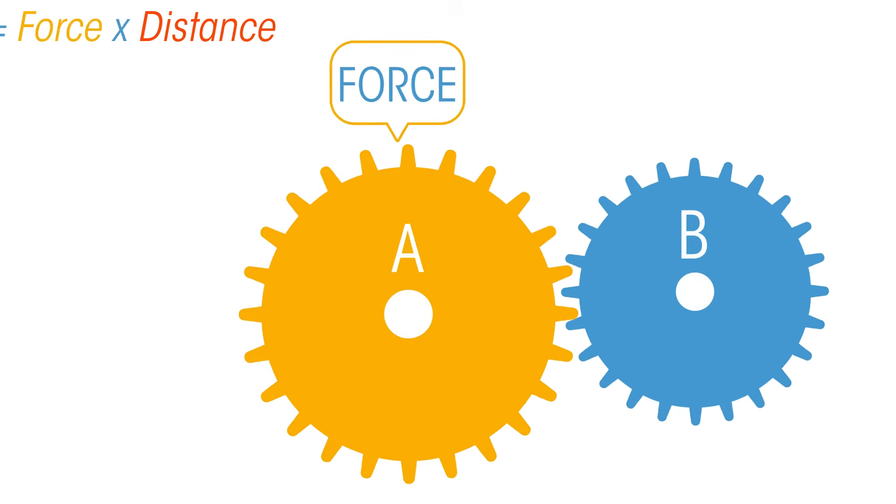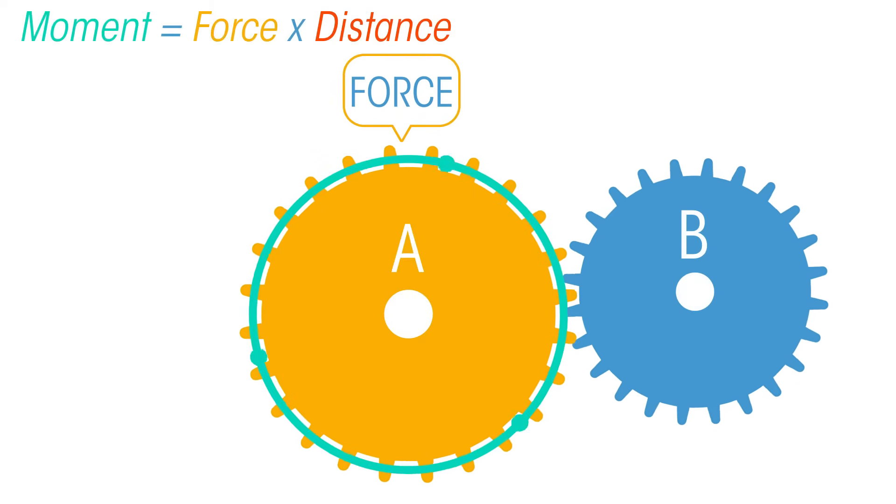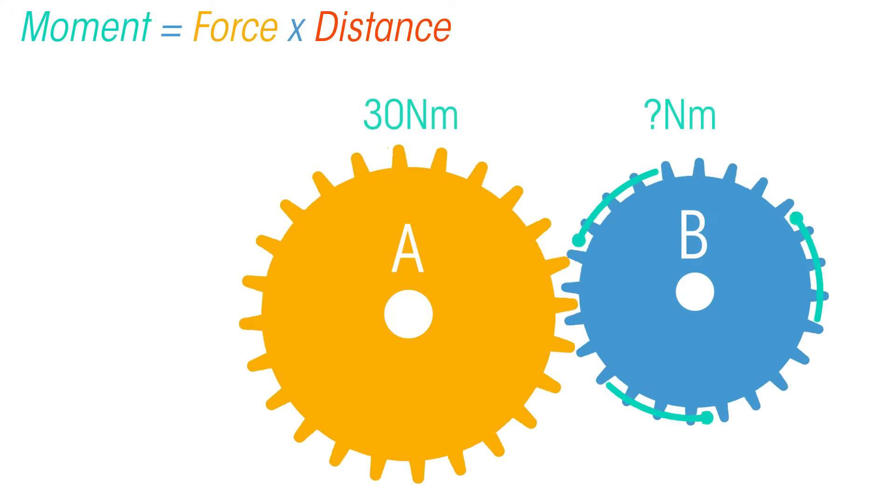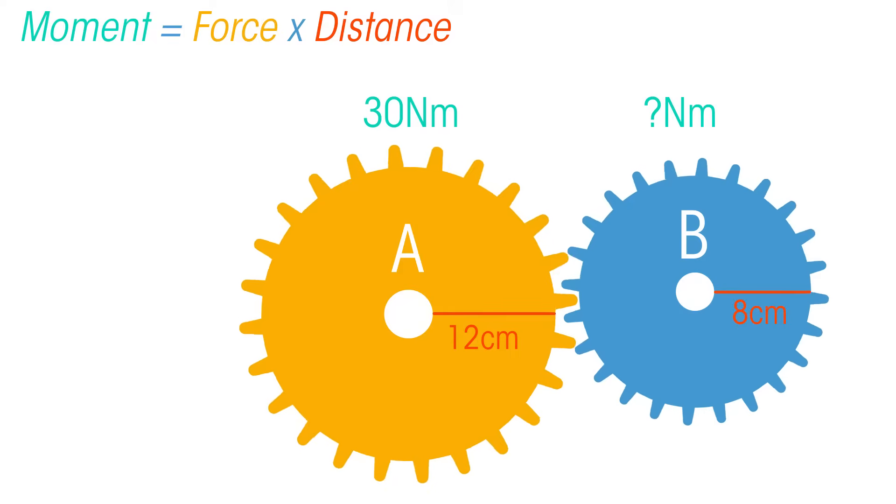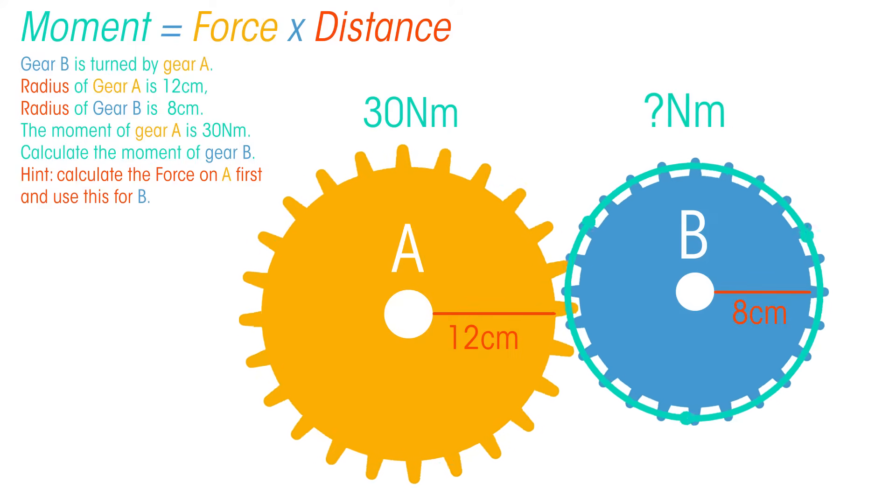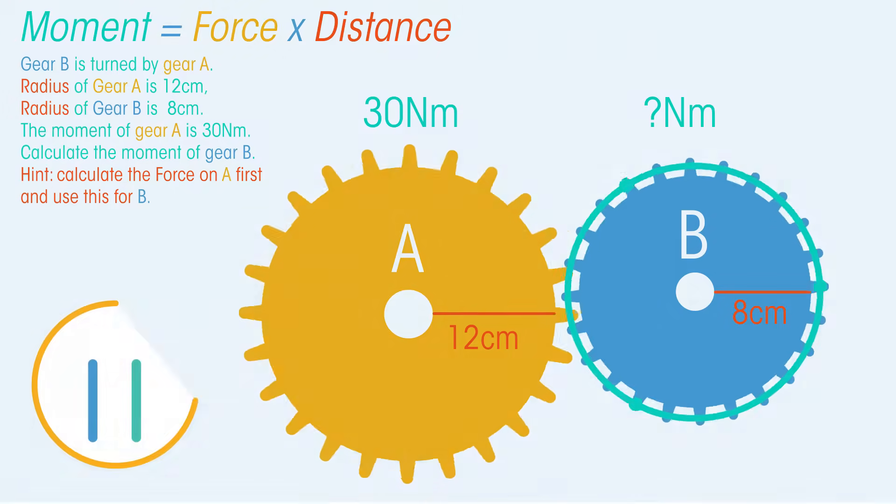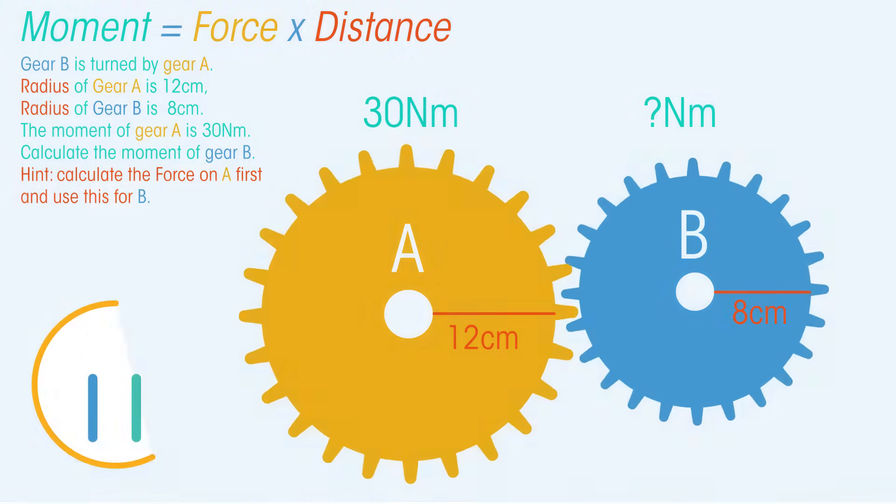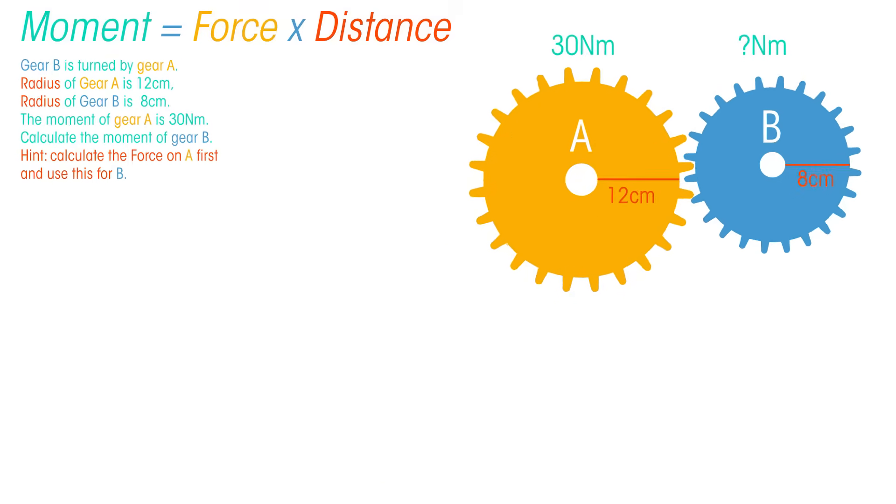Let's look at an example. The force that is exerted on gear A will be the same as the force that also acts on gear B. But the moments will be different. So start by working out the force that's being exerted on gear A, and then use this force for B to calculate the moments acting on B. Pause the video and give it a go. Did you get it right?